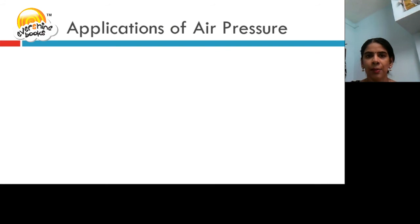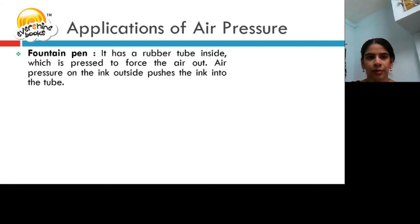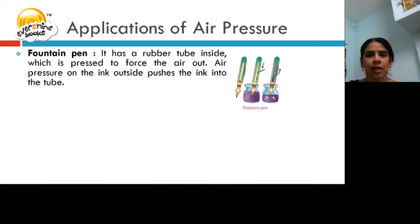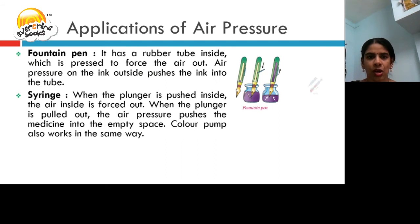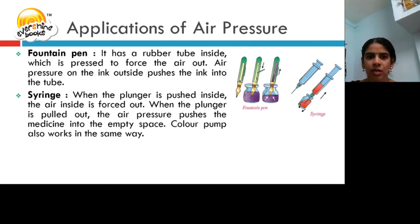Let us learn the applications of air pressure. Fountain pen: a fountain pen has a rubber tube inside it which is pressed to force the air out. The air pressure on the ink outside pushes the ink into the tube. Syringe: when the plunger is pushed inside, the air inside is forced out. When the plunger is pulled out, the air pressure pushes the medicine into the empty space.